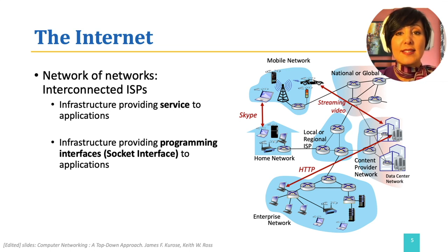They are called distributed because they involve multiple end systems, exchanging data with each other to offer their service. The applications run on end systems, and the exchange of data happens over the internet. Therefore, the internet can be seen as the infrastructure to provide services to distributed applications.